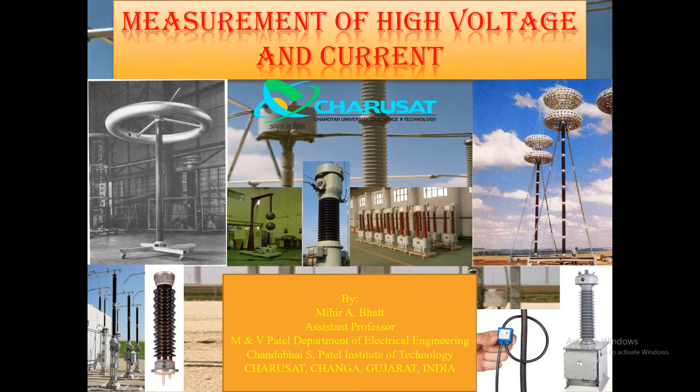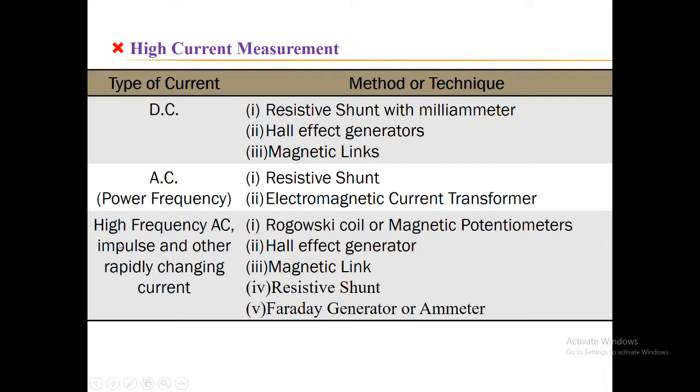Hello friends, welcome to the class of high voltage engineering. In the previous lecture, we discussed various techniques used to measure high DC currents, high alternating currents at power frequency, high frequency alternating current, impulse current, and other rapidly changing currents. We've seen Hall effect generators and how these Hall effect sensors can measure direct currents and rapidly changing currents. We also examined magnetic potentiometers extensively used to measure rapidly changing currents like impulse currents during impulse voltage tests and impulse current tests on surge arrestors.